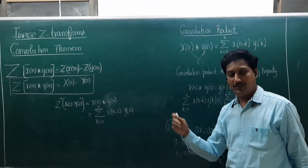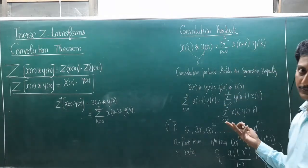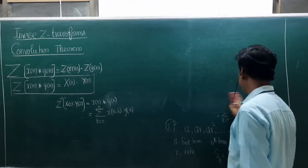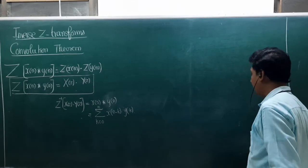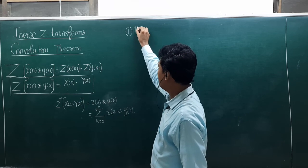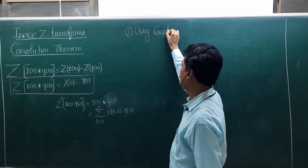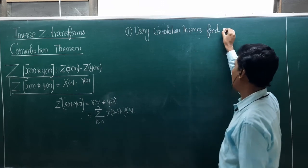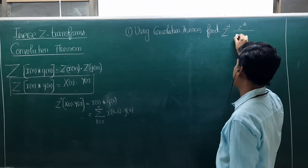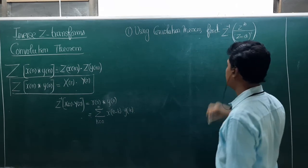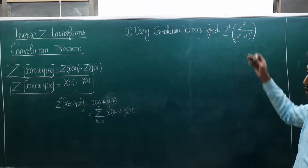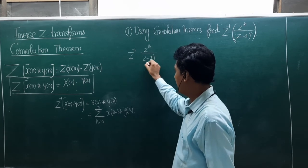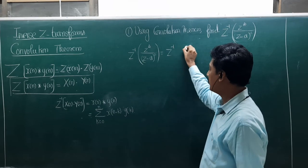Now I am going to use this convolution theorem to solve problems. Question number 1: using the convolution theorem, find Z⁻¹[Z²/(Z-a)²]. This is a short answer question. I can rewrite this as the product of two terms: Z/(Z-a) into Z/(Z-a).